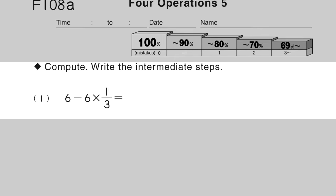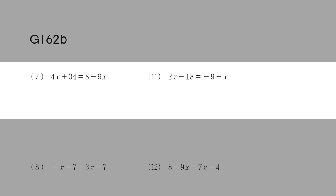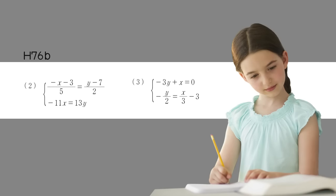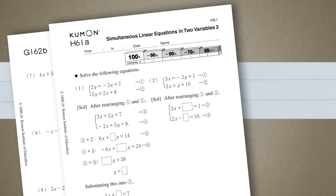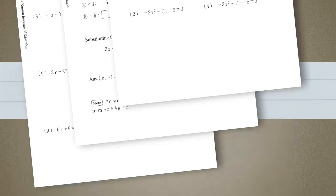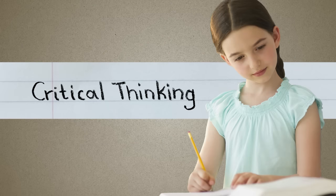Since each level in Kumon's math curriculum was designed to build on the previous level, Emily was able to study each example and then apply the skills she had gained in the previous level to learn new skills independently. As the level of difficulty in the worksheets increased by small increments, Emily advanced on her own, nurturing her critical thinking and problem-solving skills.